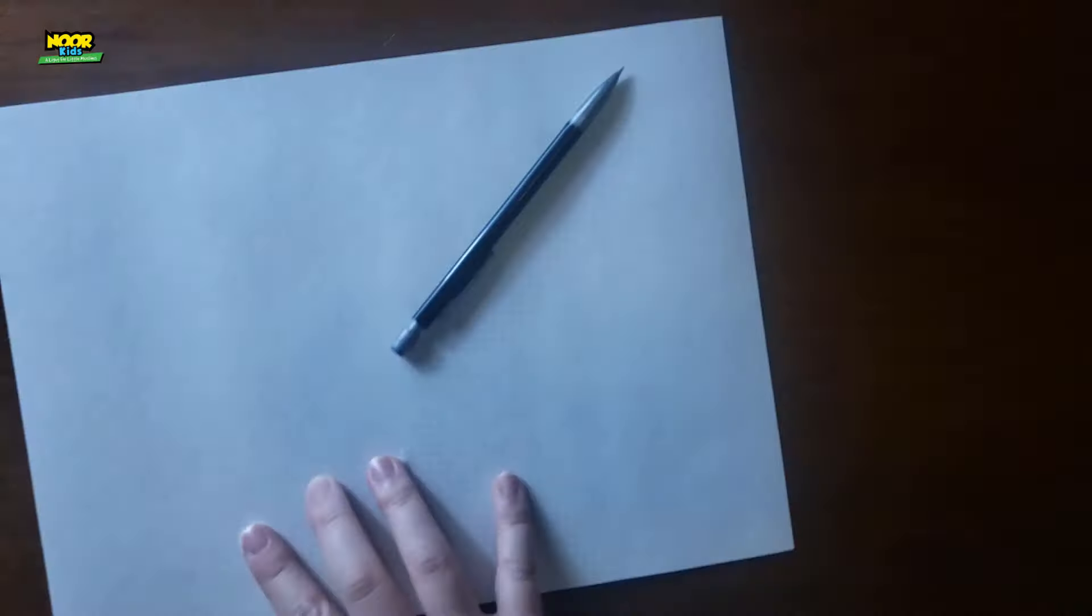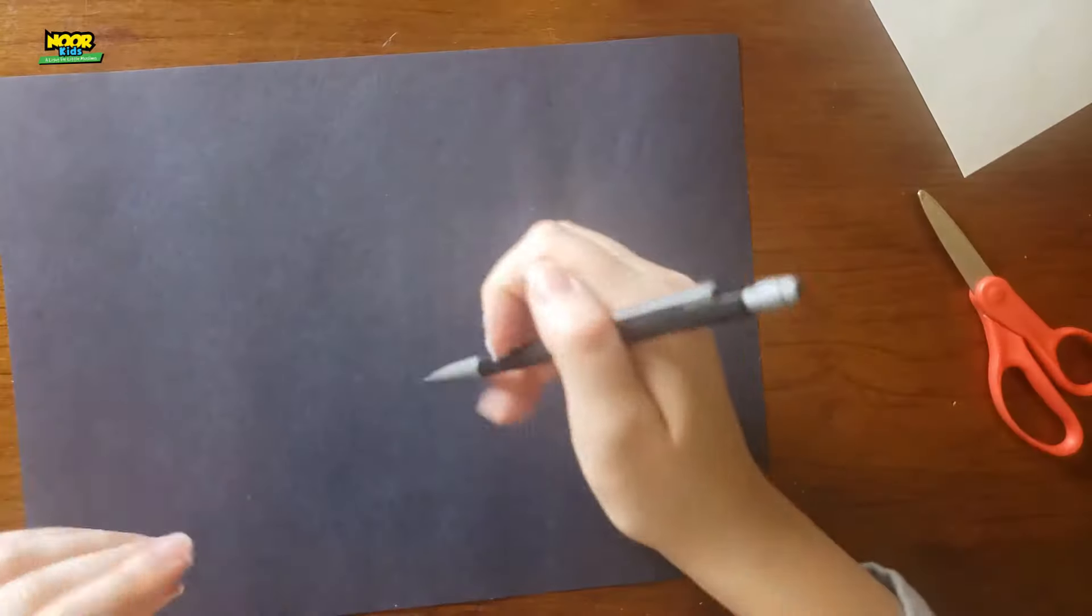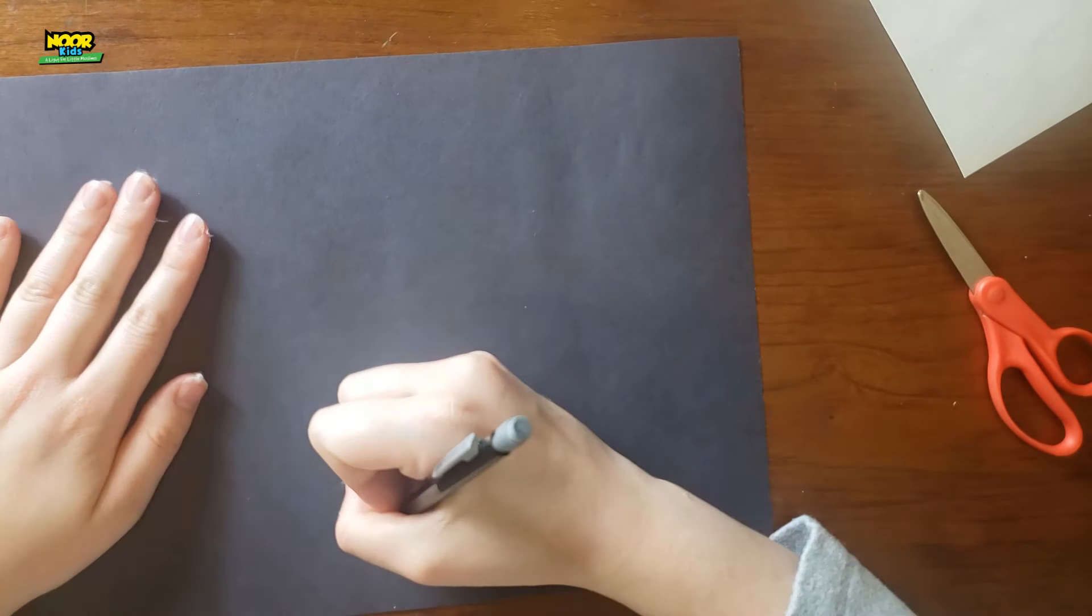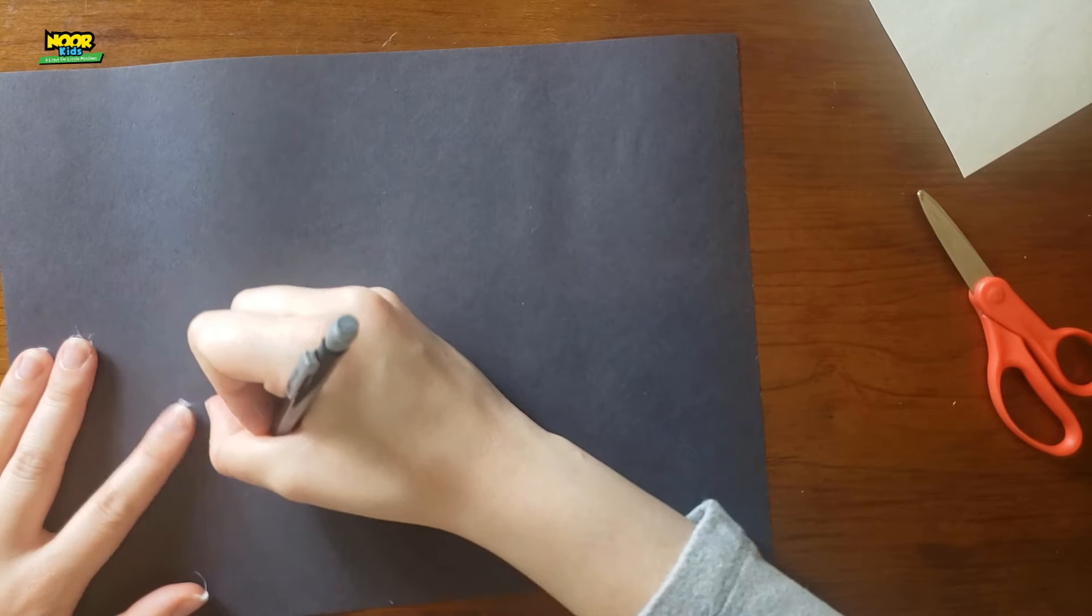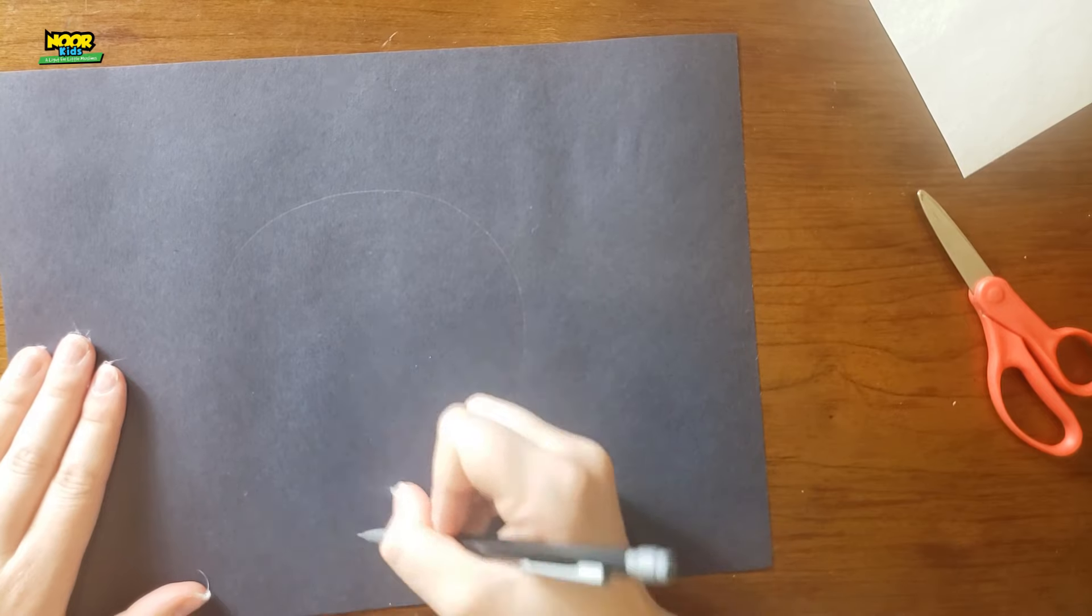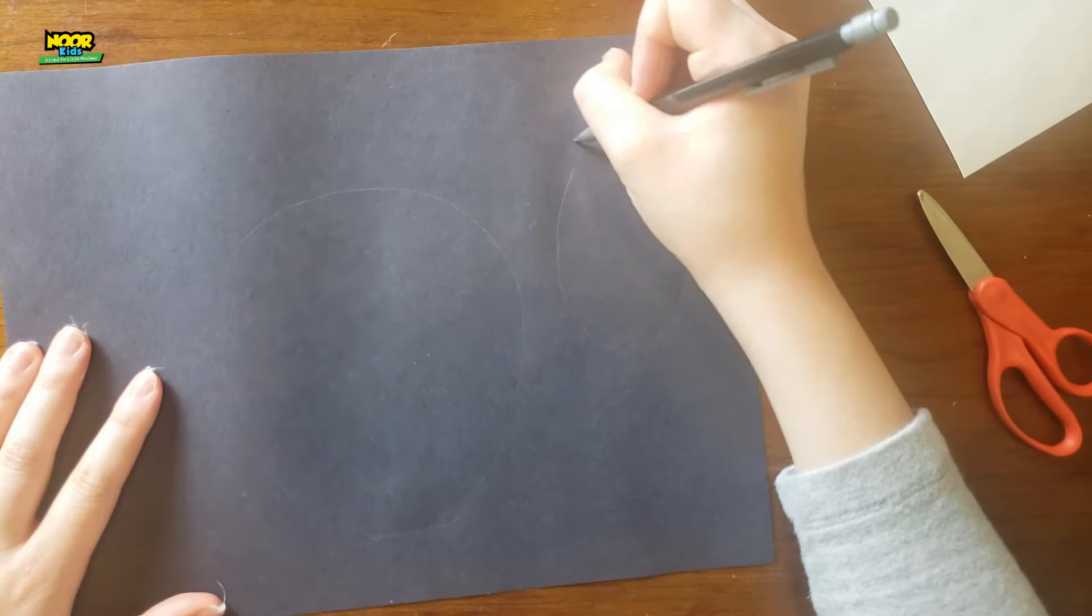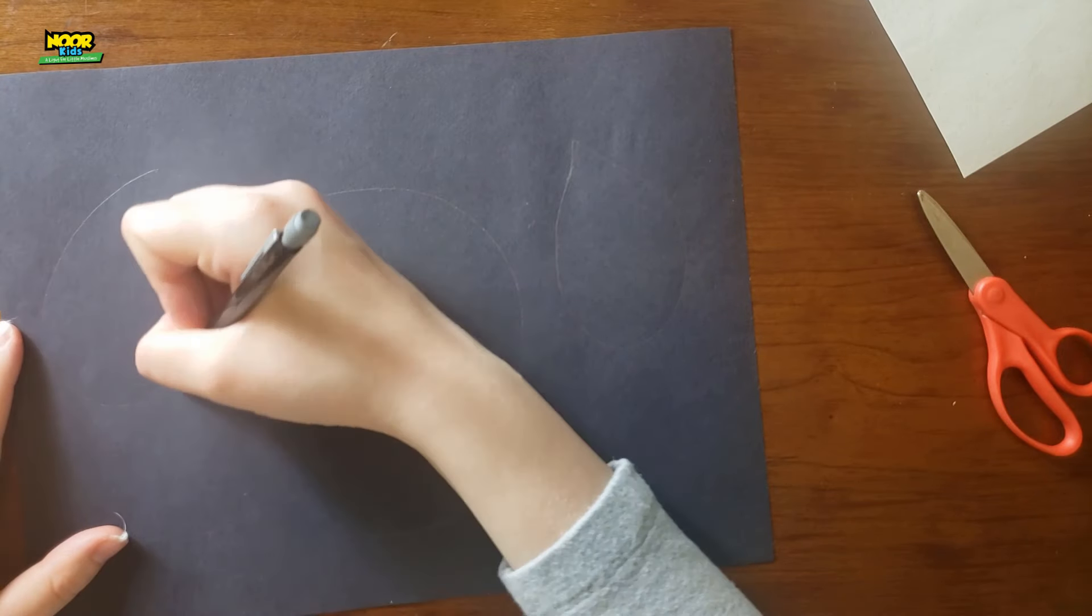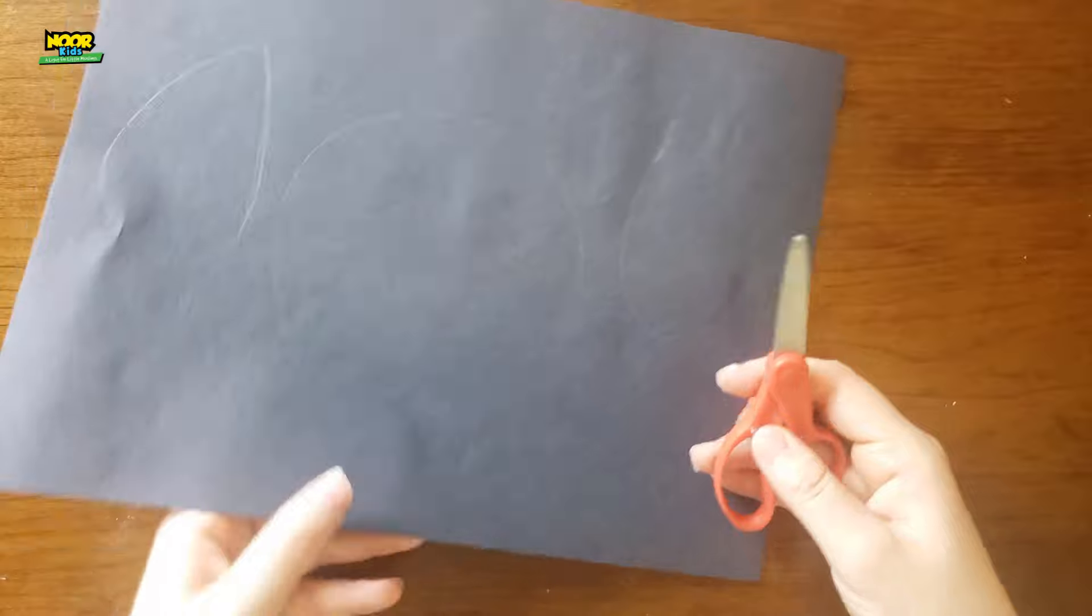So next push that aside and get out your paper. You're actually going to save the white paper for later. But on the black paper you are going to draw this big egg shape. Next draw two big teardrops but not as big as the egg. Cut them all out.